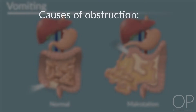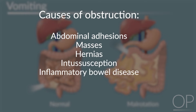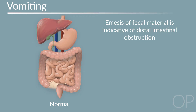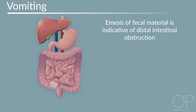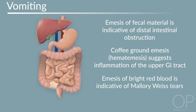Other causes of intestinal obstruction include abdominal adhesions, masses such as neoplasms, hernias, intussusception, inflammatory bowel disease, and foreign bodies. Emesis of feculent material is indicative of distal intestinal obstruction such as distal adhesions or Hirschsprung's disease. Coffee-ground emesis or hematemesis suggests inflammation of the upper GI tract. Emesis of bright red blood is indicative of Mallory-Weiss tears.